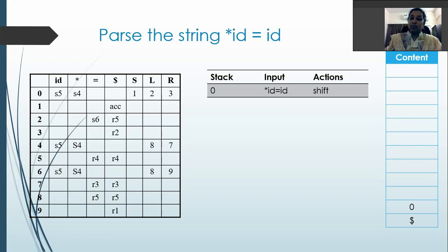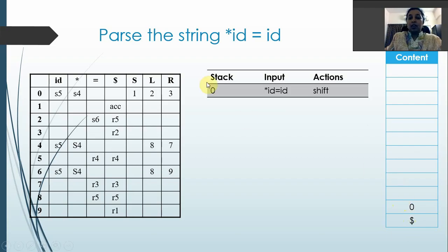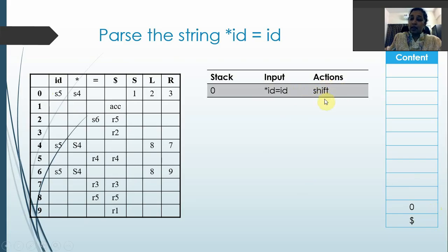For parsing any input string using SLR, LALR, or CLR, we have a stack which pushes in and pops out characters as well as states. To start, the stack will have the initial state 0 pushed in, with a dollar end-marker at the bottom and state 0 above it. The action is determined by the topmost element of the stack, which is 0, and the first character in the input string, which is star. On state 0 with star, we have the entry S4, meaning shift to item set 4.